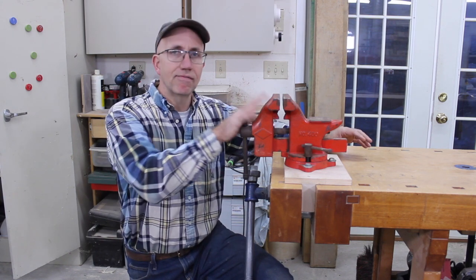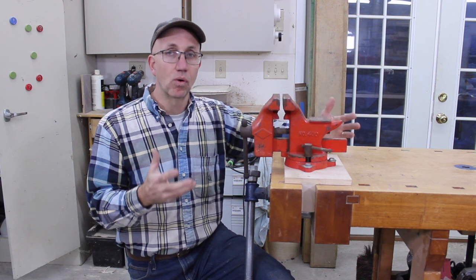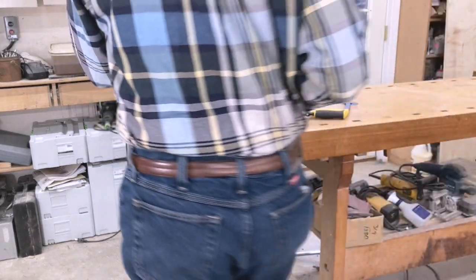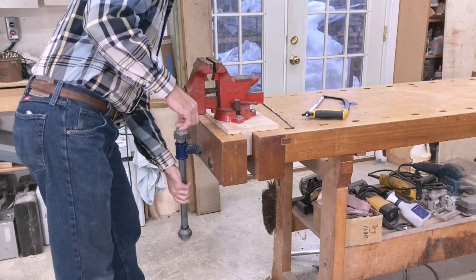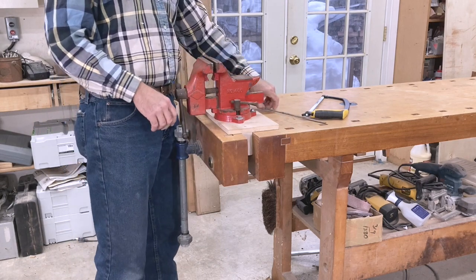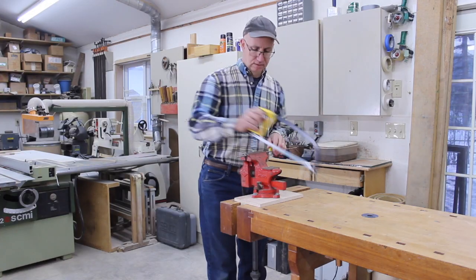And so even if you have a metal vice somewhere in the shop and you don't use it all that often to hold things because you use your woodworking vice, you can free up space in your workshop by just mounting this onto a portable base that then can be mounted into another vice, your woodworking vice on your woodworking bench.